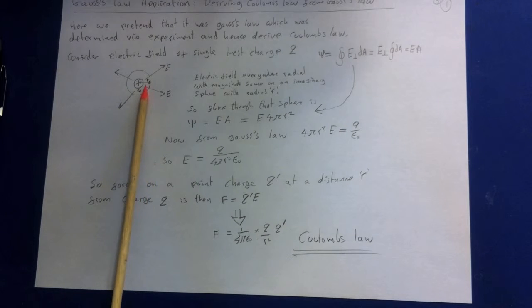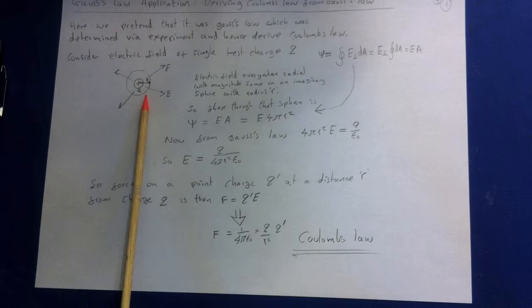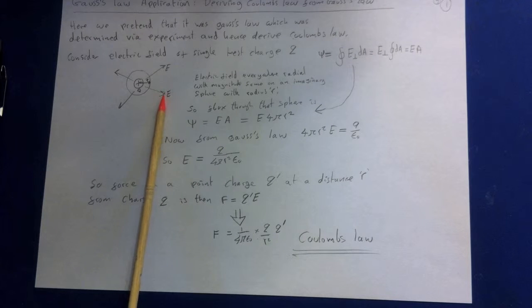So if we select some Gaussian surface as shown with radius r, this is our Gaussian surface with radius r. E perpendicular equals constant at all points on the surface.